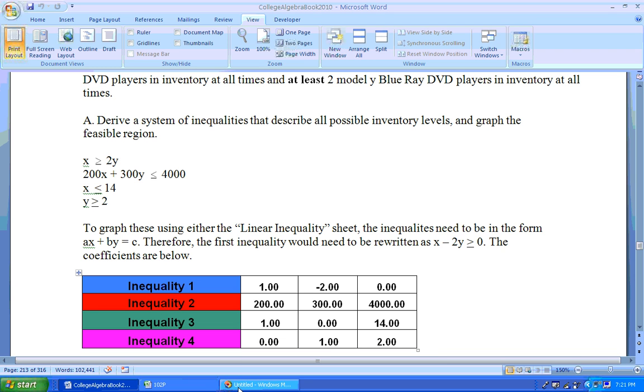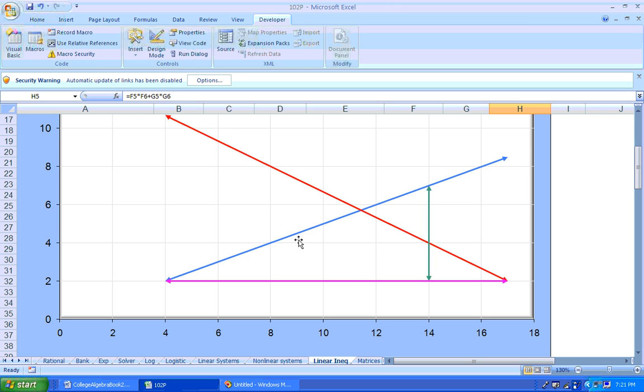Now, 4, 4 didn't work, and 4, 4 is above the blue line. So, therefore, the solution region is below the blue line. Okay, so we know it's below the blue.